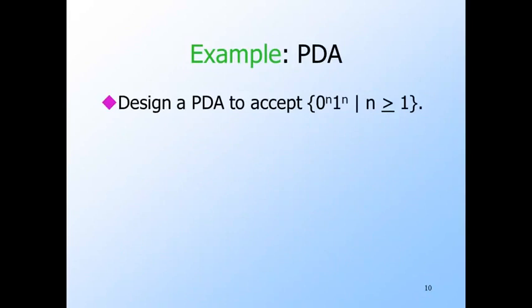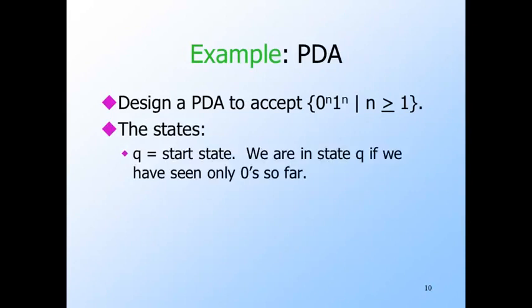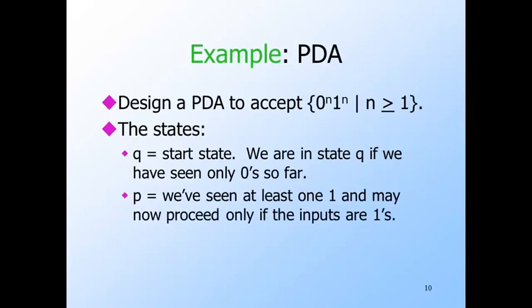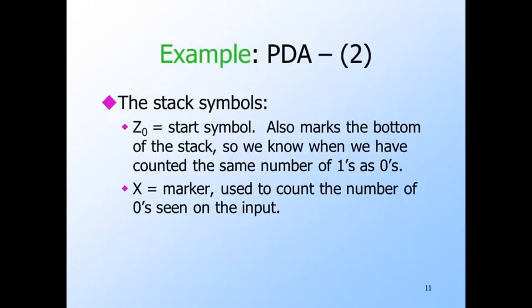Let's design a PDA for our favorite context-free language: the set of strings of the form 0^n 1^n. We need three states. Q will be the start state, representing the condition that we've so far seen only zeros on the input. P is the state we go to when we see the first one — we use the state to remember not to accept if we ever see any more zeros. And F will be the final state; it's there only so we can accept when the number of ones matches the number of zeros. We also need two stack symbols. Z0 is the start symbol and marks the bottom of the stack. As we read zeros, we push one X onto the stack for each zero. As ones come in, we pop one X for each one. So when Z0 again becomes the top stack symbol, we know we have seen exactly as many ones as zeros, and we accept.